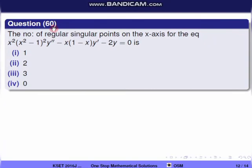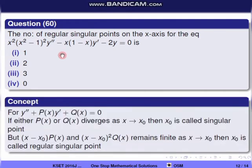Question 60: Find the number of regular singular points on the x-axis for x²(x²−1)²y″ − x(1−x)y′ − 2y = 0. A point x₀ is a regular singular point if (x − x₀)p(x) and (x − x₀)²q(x) remain finite as x → x₀, where p and q come from the standard form y″ + p(x)y′ + q(x)y = 0.